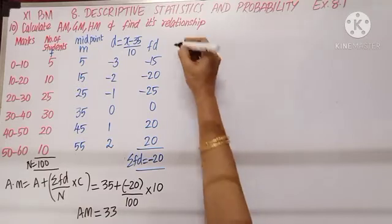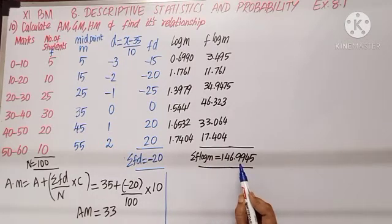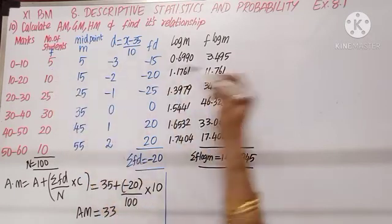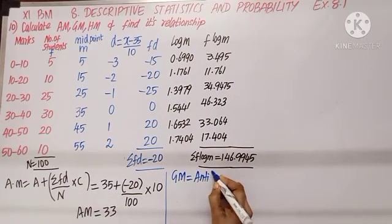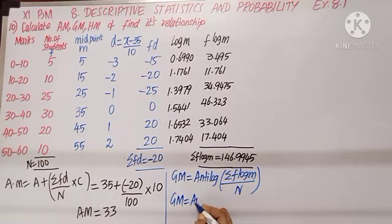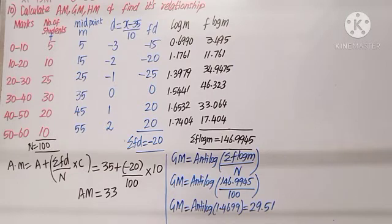For geometric mean, find log m for each midpoint. Multiply by frequency f to get f × log m, tabulate and total: sigma(f log m) = 146.9945. GM = antilog of (sigma f log m / n) = antilog of (146.9945 / 100) = antilog of 1.4699 = 29.51.